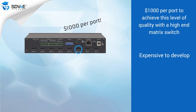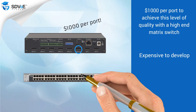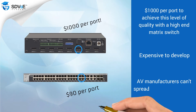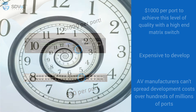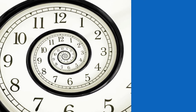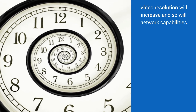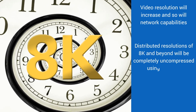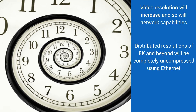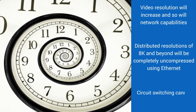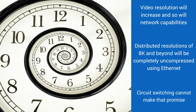It's expensive to develop those things, and pro-AV manufacturers simply don't get to spread that development cost over hundreds of millions of ports like the Ethernet manufacturers do. As time goes by, video resolution will increase, and thankfully so will network capabilities. As network performance increases, we see resolutions of 8K and beyond, completely uncompressed, distributed via Ethernet thanks to the evolution of packet switching. Circuit switching simply cannot make that promise.